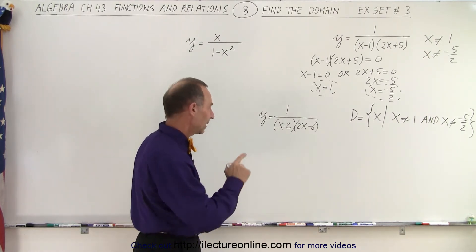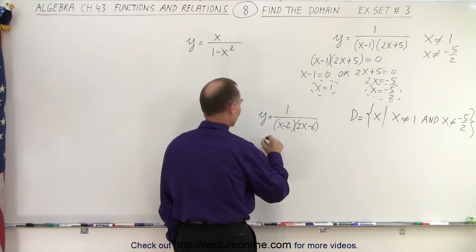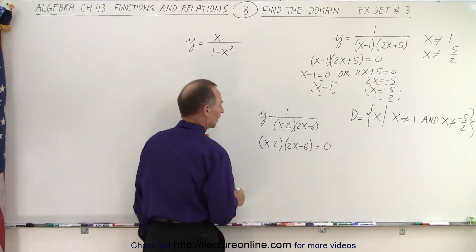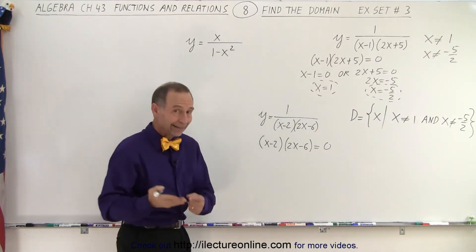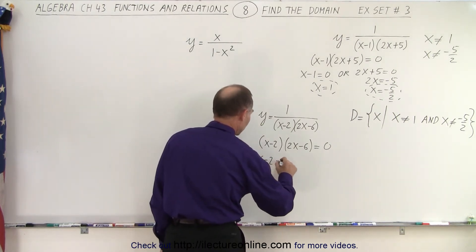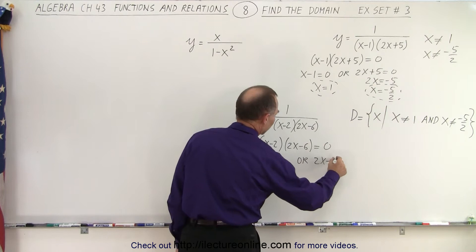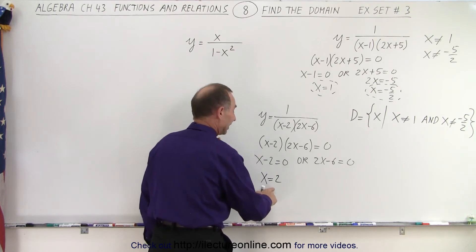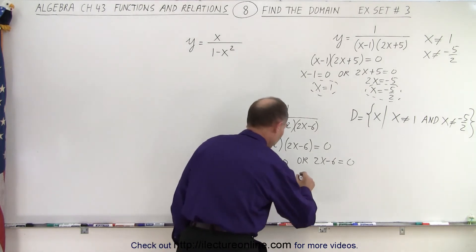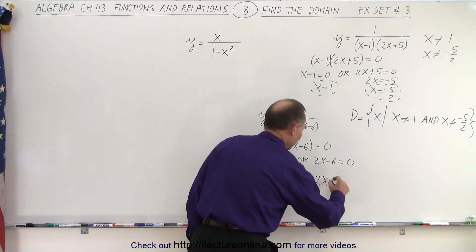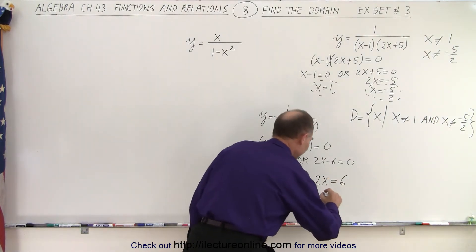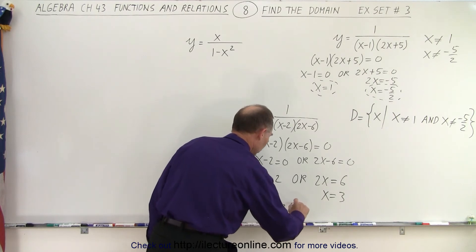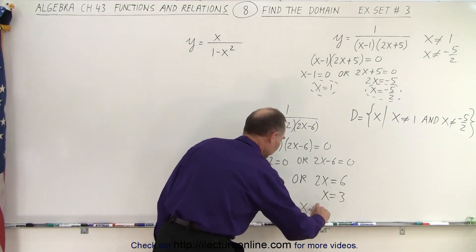Here we have the same thing. We set x minus 2, times 2x minus 6, equal to 0, to find the values that x cannot be. So that means x minus 2 equals 0 or 2x minus 6 equals 0. On this side, we get x equals 2 — that's the prohibited value. Or, 2x equals positive 6, which means x equals 3. Those are the prohibited values, so x should not equal 2 and x should not equal 3.